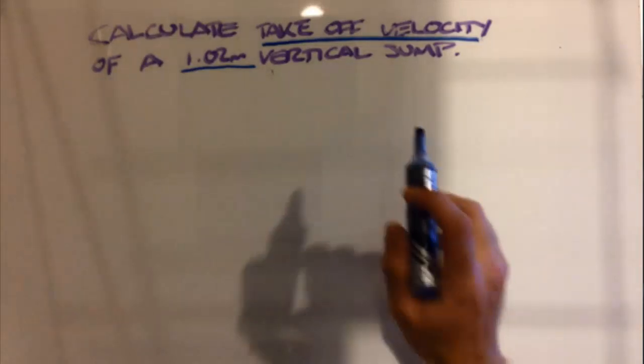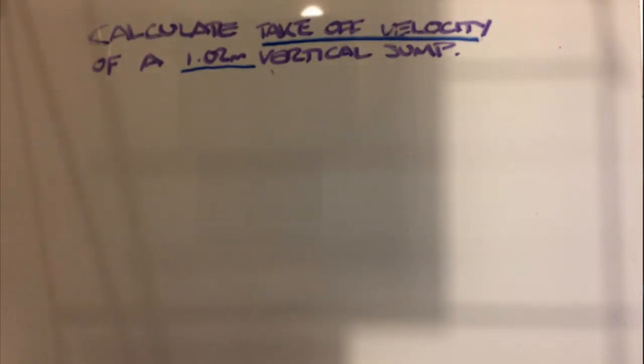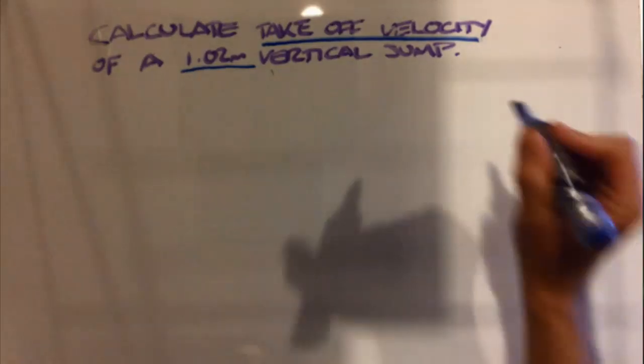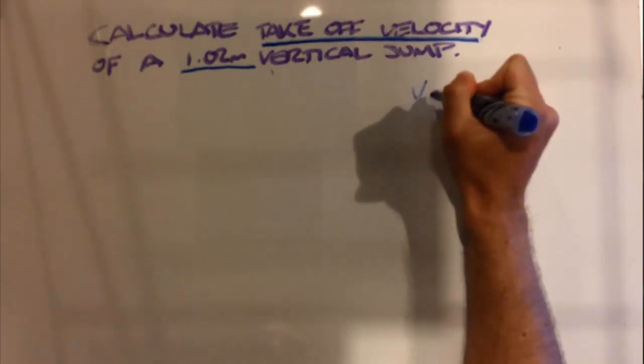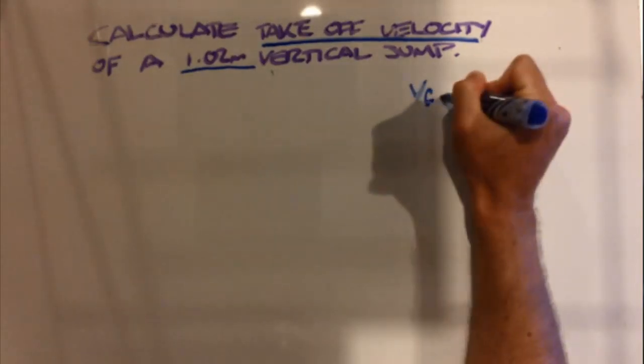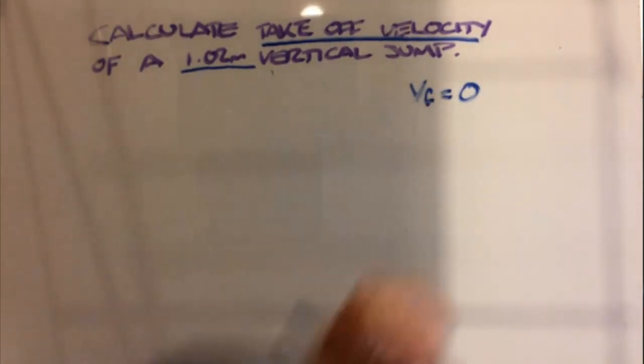When we see vertical jump, we can remember that at the top of a vertical jump our final velocity is always zero.